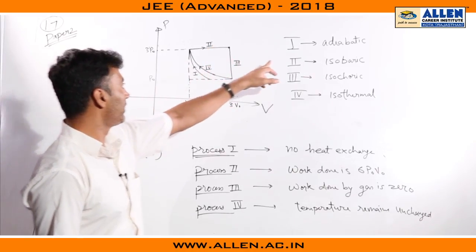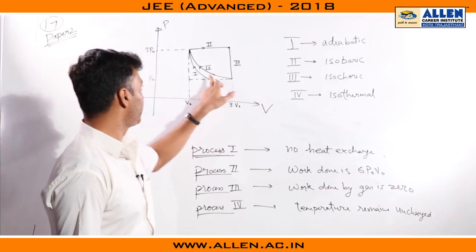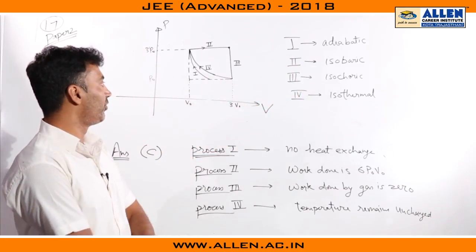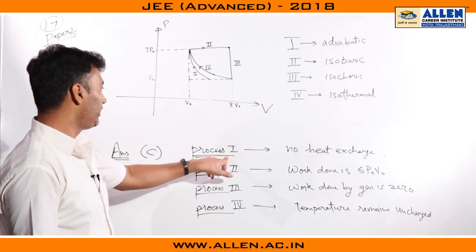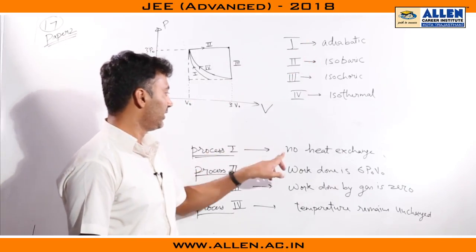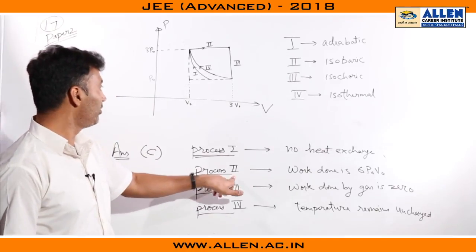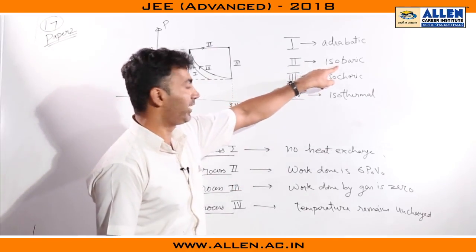We could have easily found out that 1 corresponds to adiabatic, 2 corresponds to isobaric, 3 corresponds to isochoric, and 4 corresponds to isothermal. Straight away since we are talking of process 1 and it is an adiabatic process there must be no heat exchange.